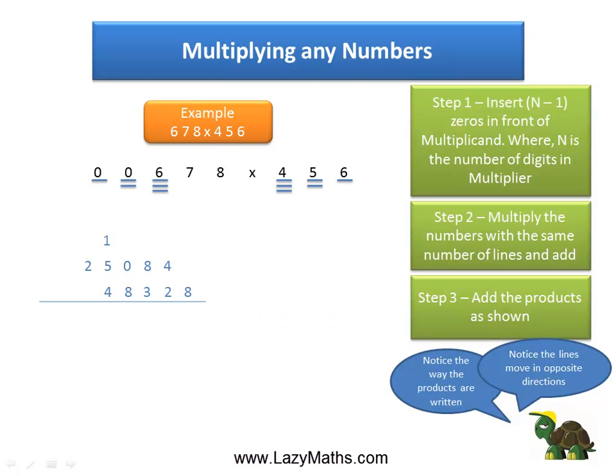So 8 goes in as 8, 4 plus 2 is 6, 8 plus 3 is 11 with 1 carryover. The 1 carryover plus 0 plus 8 is 9, then we have 1 plus 5 plus 4 is 10 with a 1 carryover. The 1 carryover plus 2 is 3, so we get our final answer as 309,168.